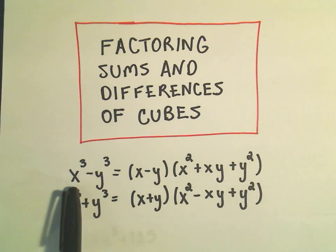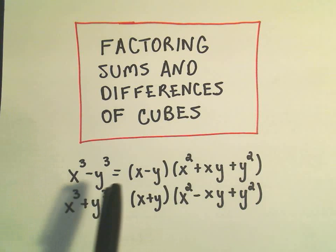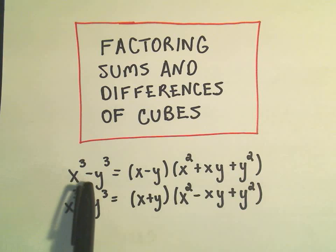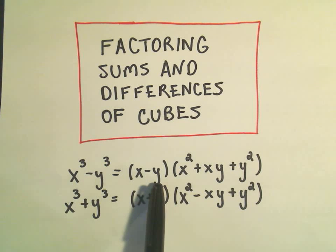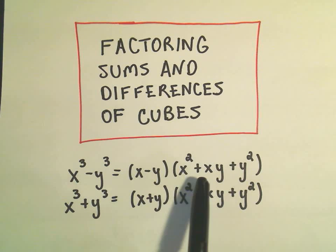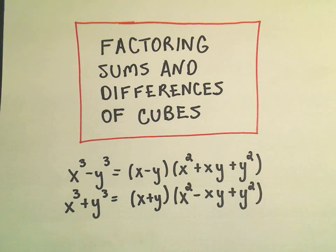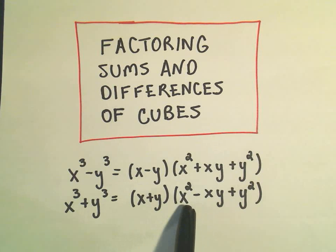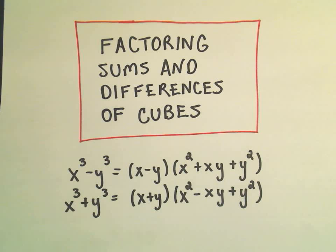The first one says if you have something cubed minus something cubed, so x³ minus y³, we get the quantity (x - y) times the quantity (x² + xy + y²). If we have something cubed plus something cubed, x³ plus y³, we get the quantity (x + y) times the quantity (x² - xy + y²).